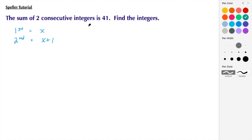We're going to take the first expression which is X, add it to the second expression which is X plus 1, and set that equal to 41. And then we simplify.